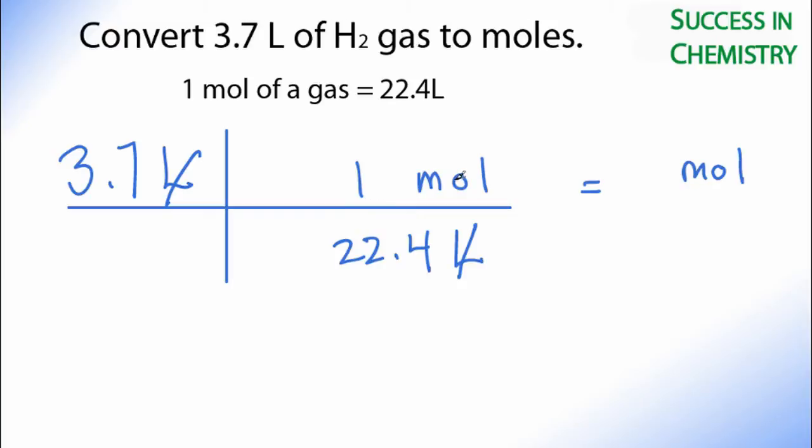Which gives me 0.17 moles. But since I only have one decimal point in each of the terms here, I really should only have one decimal point after the zero, so I'm going to change that to 0.2.